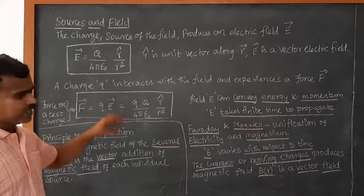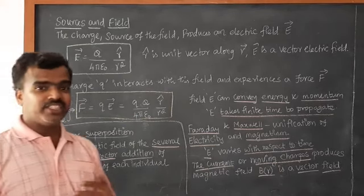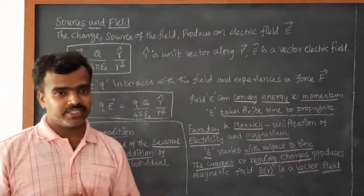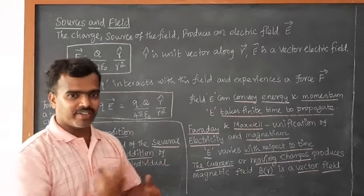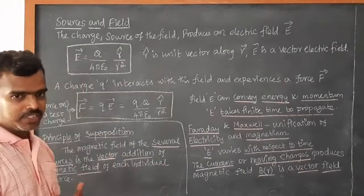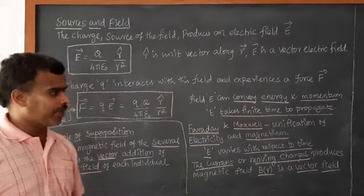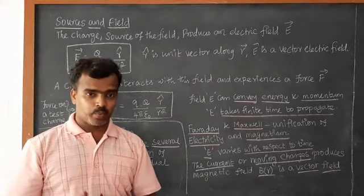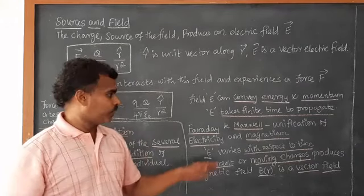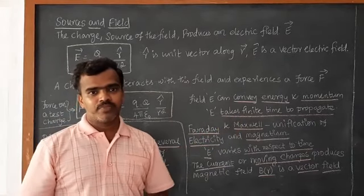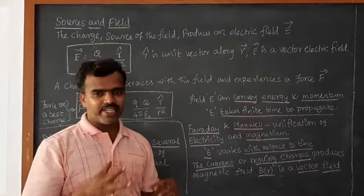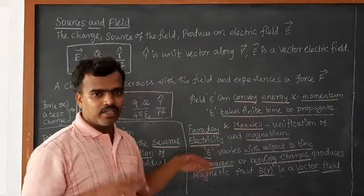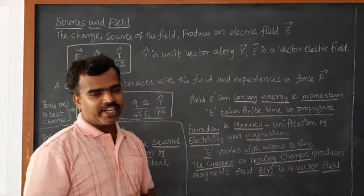And this E can convey the energy and momentum, and it takes finite time to propagate. The electric field vector is moving from one place to another place. That takes finite time to propagate. And this E can be varied with respective time. That's why it's leading in Electromagnetism. That's why the Faraday and Maxwell give the brief introduction about the unification of electricity and magnetism.